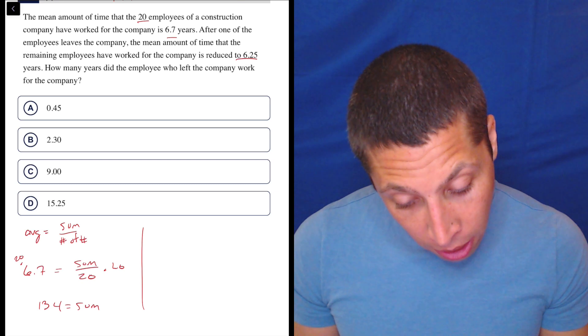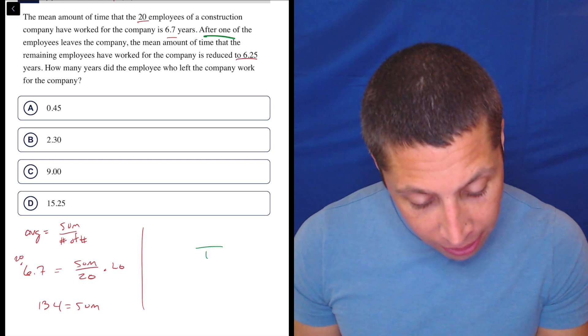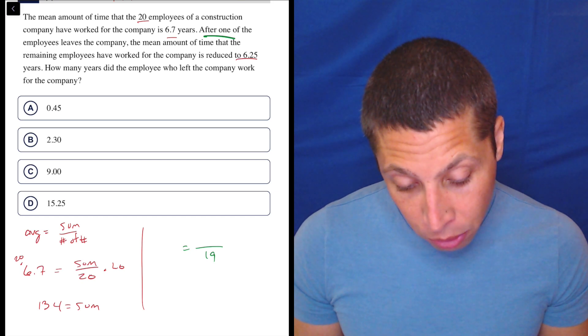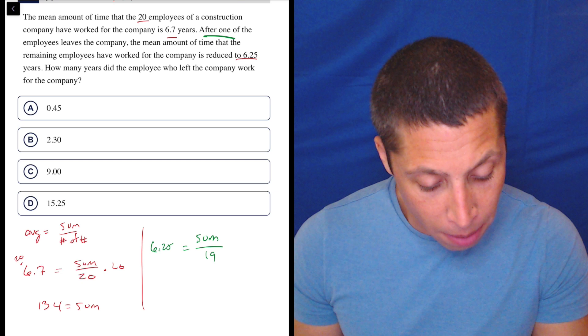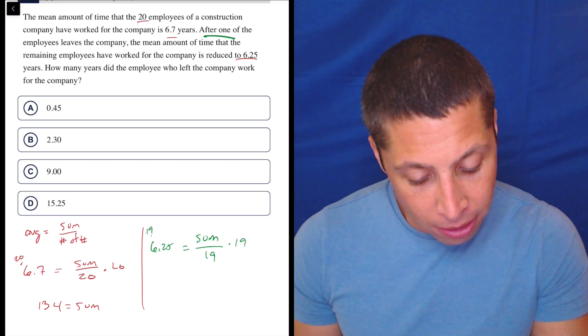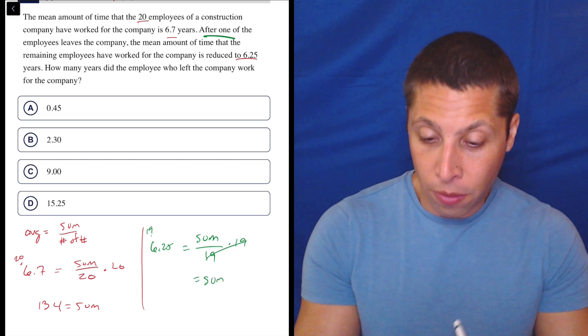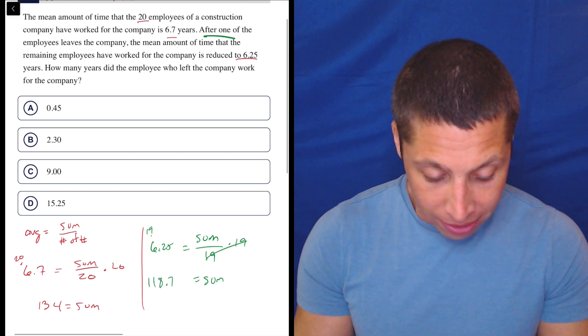Then what happens? Then one of the employees leaves, meaning now we have 19 employees and the remaining place of work for the company is reduced. The mean is reduced to 6.25. So we still don't know the sum. Now I multiply by 19 on both sides and I get a sum of 6.25 times 19 is 118.75, right?